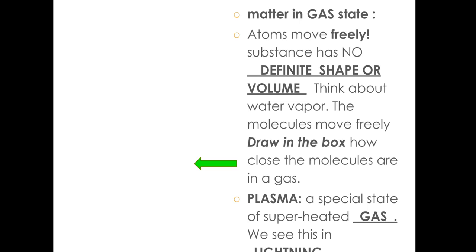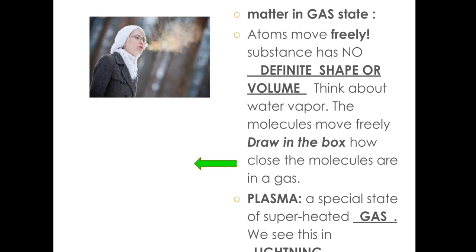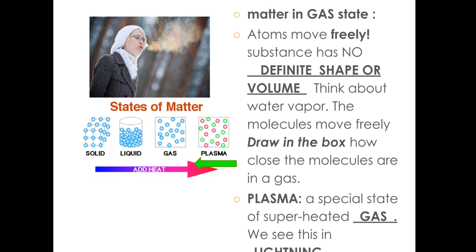Let's talk about matter in its gas state. When matter is in its gas state, the atoms move freely. The substance has no definite shape or definite volume. Let's think about water vapor. Every time you breathe out in the winter, those are water molecules that are freezing as they come out of your mouth. Draw how freely the molecules are moving in the box.